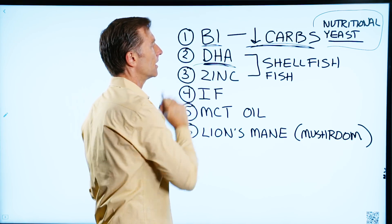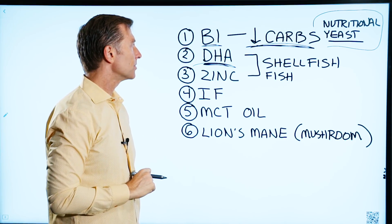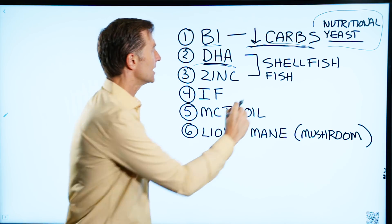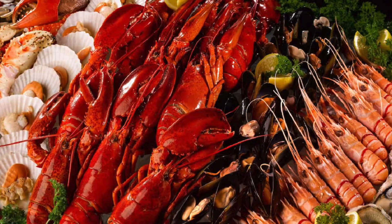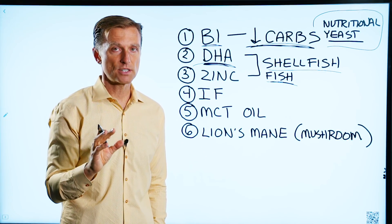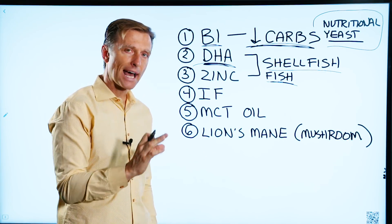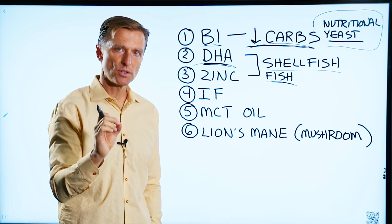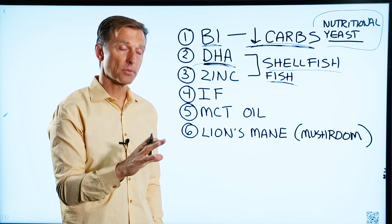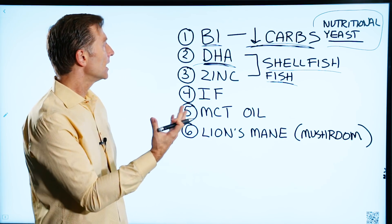DHA is the next most important thing you can give the brain. It forms the physical structure of your brain - shellfish and fish. Vitamin D, which is not on the list, is very important as well. I would start taking at least 20,000 international units of vitamin D. You want to take K2 with that as well. That's good for depression, but it's also good for the brain in general.